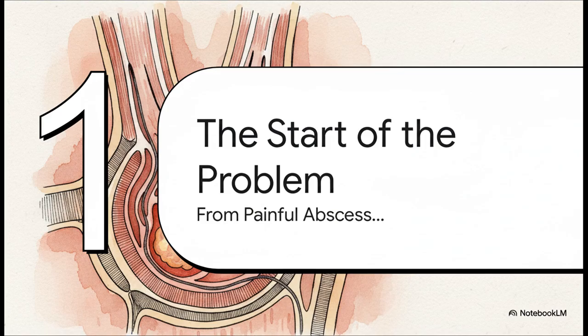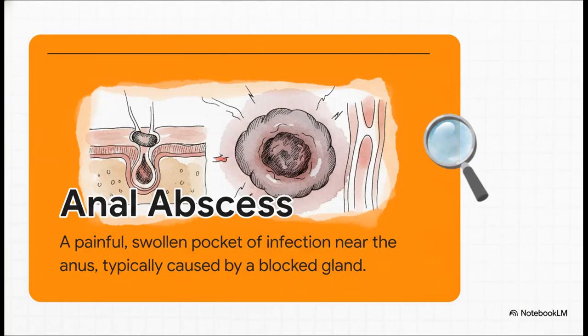To really get what a fistula is, you first have to understand the abscess that kicks the whole thing off. An anal abscess — what is it really? Put simply, it's a painful, swollen pocket of infection, of pus, that forms right near the anus. It all starts when one of the tiny, normal glands that we all have inside our anal canal just gets blocked.